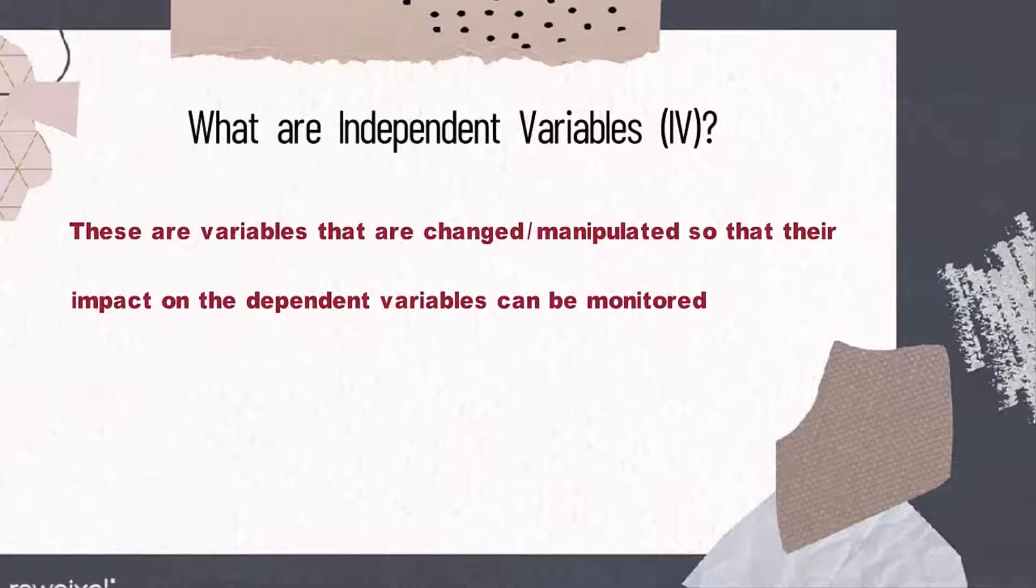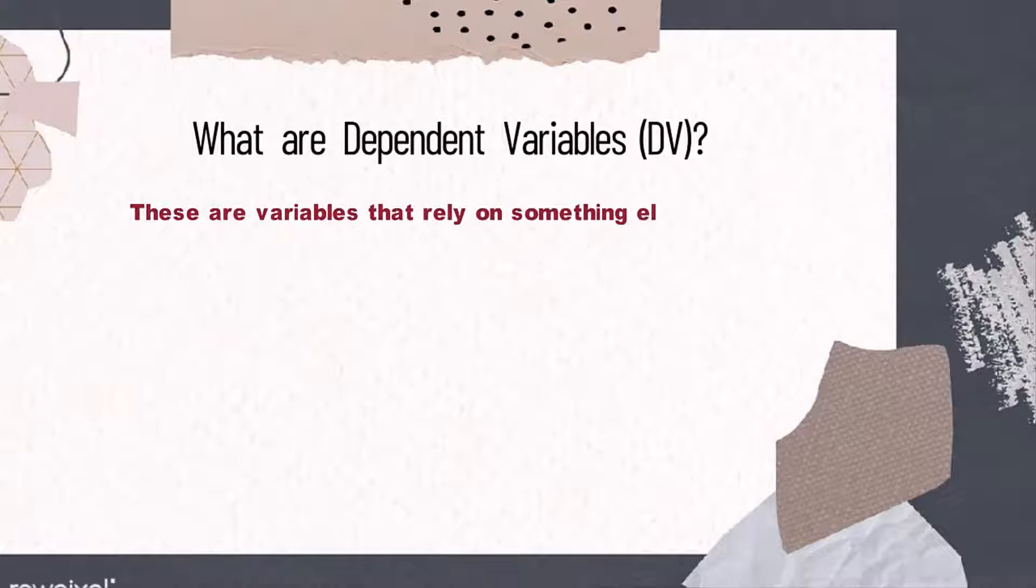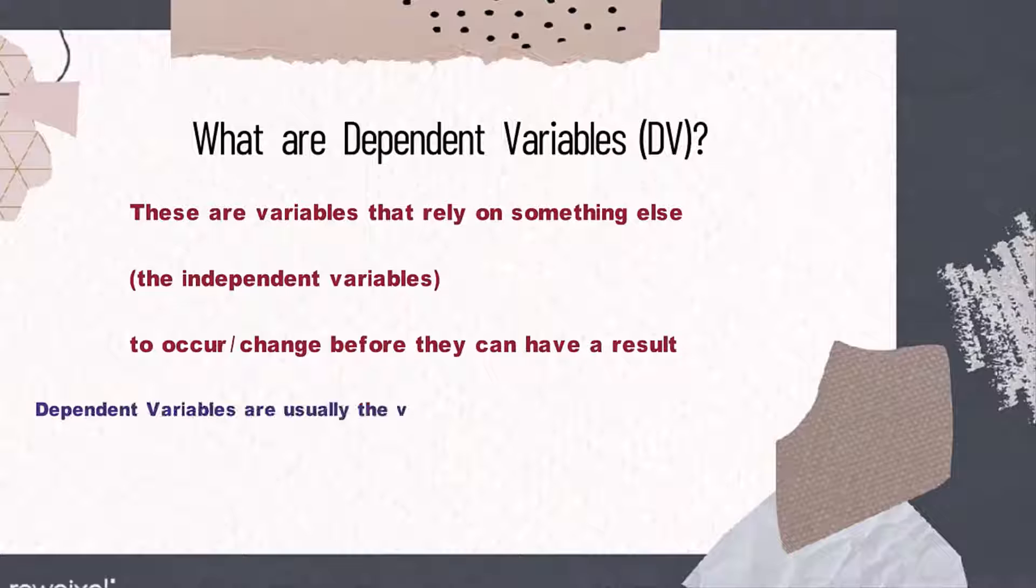Dependent variables are variables that rely on something else - the independent variables - to occur and change before they can have a result. Dependent variables are usually the variables the researcher is interested in.